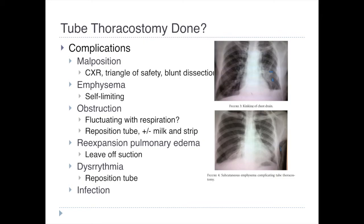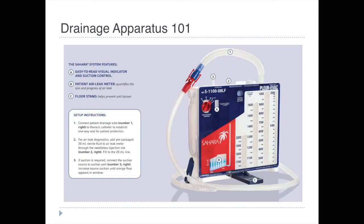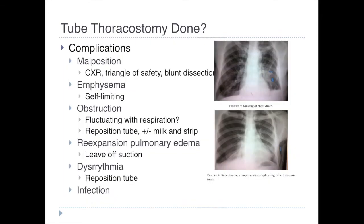Re-expansion pulmonary edema has an incidence rate of 1% but a very high mortality rate, and can occur if the lung expands too quickly. One way to avoid this is to initially leave the tube off suction — just gravity on the water seal or one-way valve. Dysrhythmia can occur if you accidentally touch the pericardium or heart — reposition the tube in that case. One important thing: when repositioning a tube, tubes go out — they never go back in. You can pull the tube, but never push it in further after you've already finished the procedure.